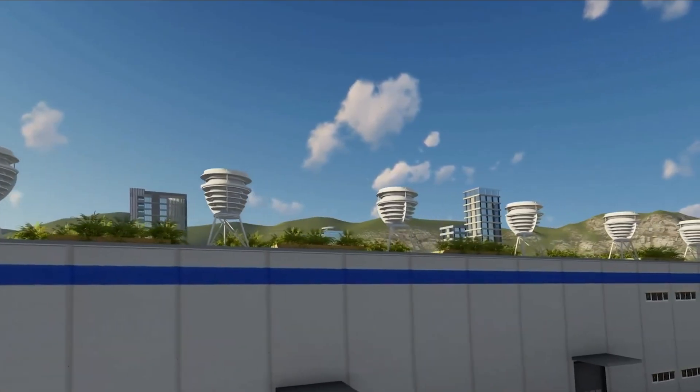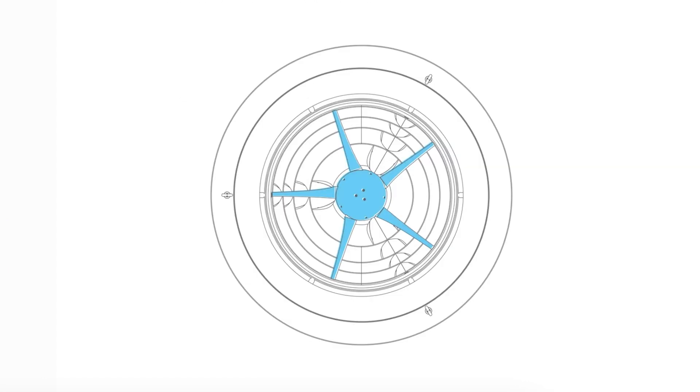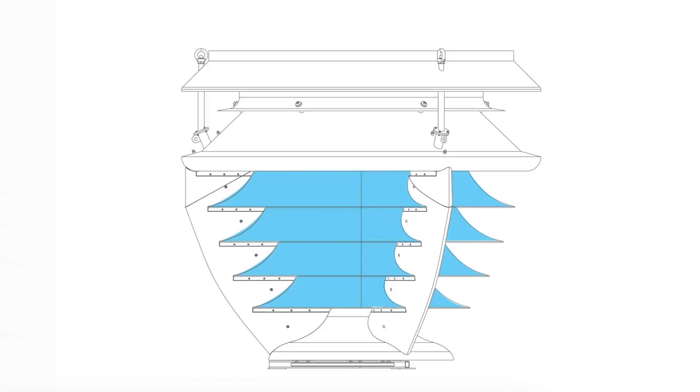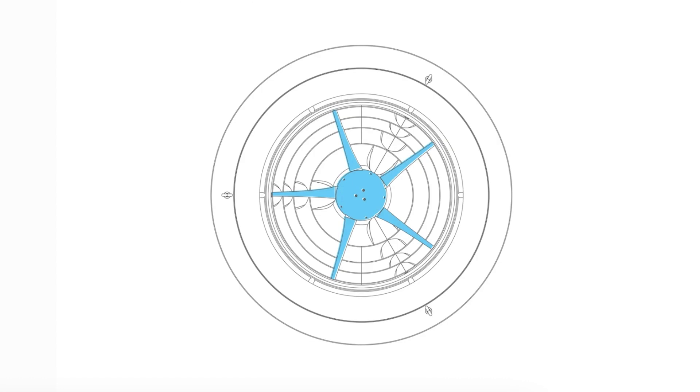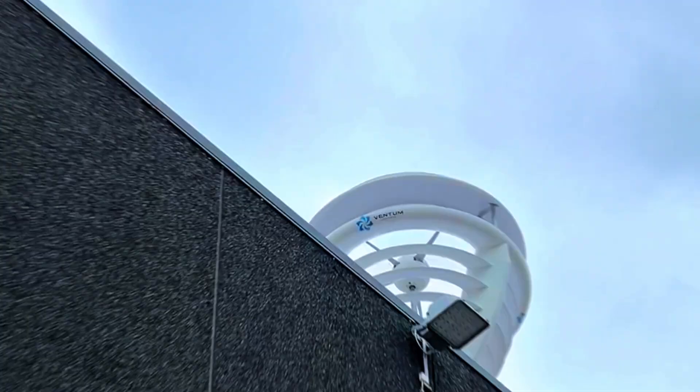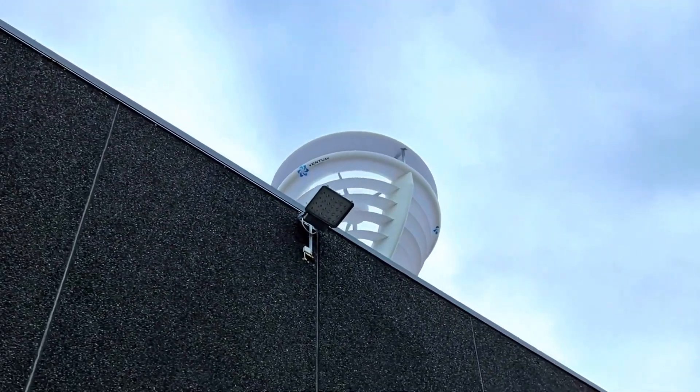Cut-in, cut-out speed. The VX175 wind turbine is designed to start generating power at wind speeds as low as 3.5 meters per second. It is capable of operating efficiently even at wind speeds as high as 18 meters per second.